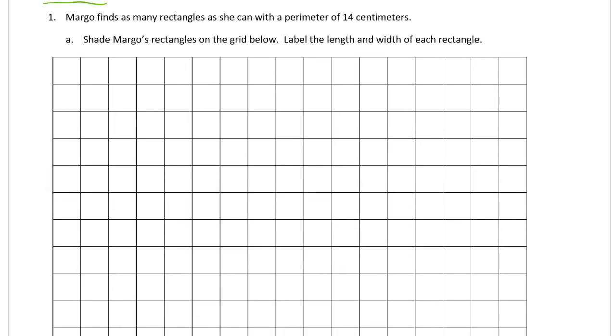Margo finds as many rectangles as she can with a perimeter of 14 centimeters. That's a perimeter, not an area. Perimeter of 14 centimeters. Shade Margo's rectangles on the grid below. Label the length and width of each rectangle.